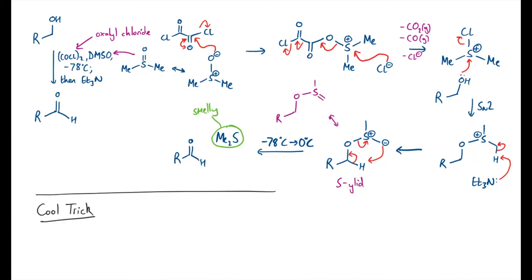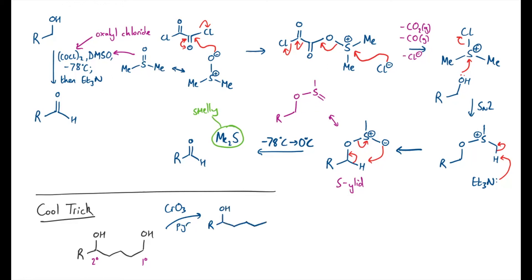And now for a cool trick that you can use the Swern oxidation for — if you have a situation something along the lines of what I've got drawn here, where you've got a 1,5-diol with both a secondary and a primary alcohol, depending on your choice of oxidant, you might not get the product you expect. For example, if you were to use a Collins-type oxidation — using chromium trioxide and pyridine or variants — you'd expect that mechanism to react faster at the primary alcohol purely on steric grounds, and that will get you the hydroxy aldehyde.